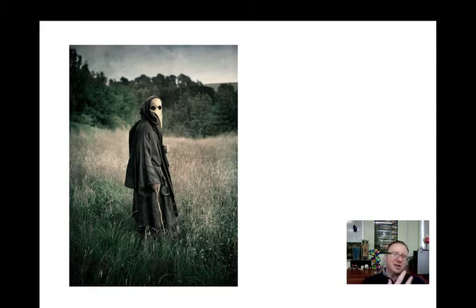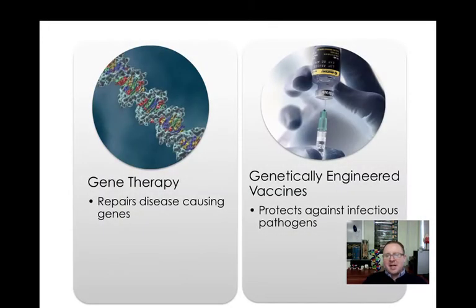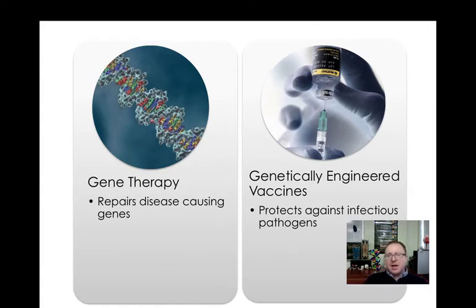So we protect ourselves by separating ourselves as much as possible from disease. We can do this with quarantine units as well. But more and more we're relying on our technology and understanding of biotechnology to help protect us from disease. Now there are two major ways: we have gene therapy and we have genetically engineered vaccines.